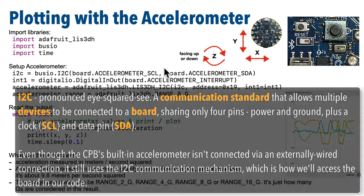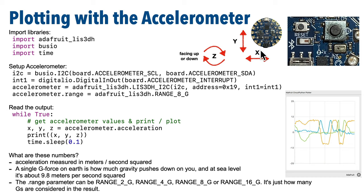To get I2C set up for the accelerometer that's built into our device, not connected via a wire connection, we use this line: `i2c = busio.I2C(board.ACCELEROMETER_SCL, board.ACCELEROMETER_SDA)`. SCL and SDA represent the two wires in I2C — SCL is the clock wire to synchronize multiple devices that send signals over the same wires, and SDA is the data line that sends signals from our CircuitPython code.